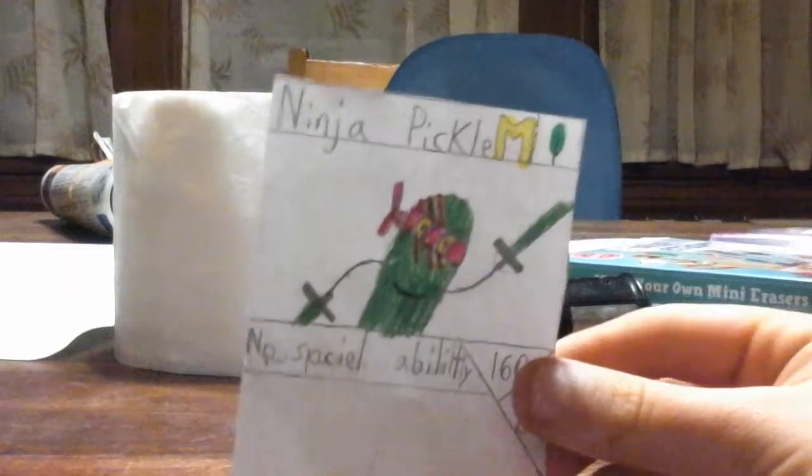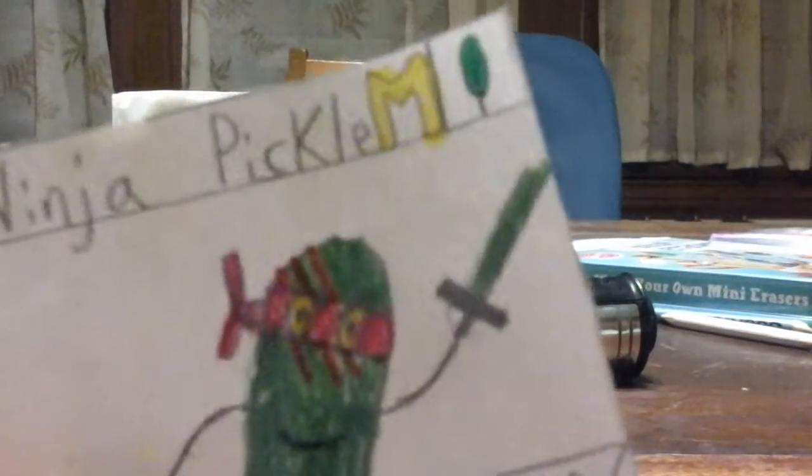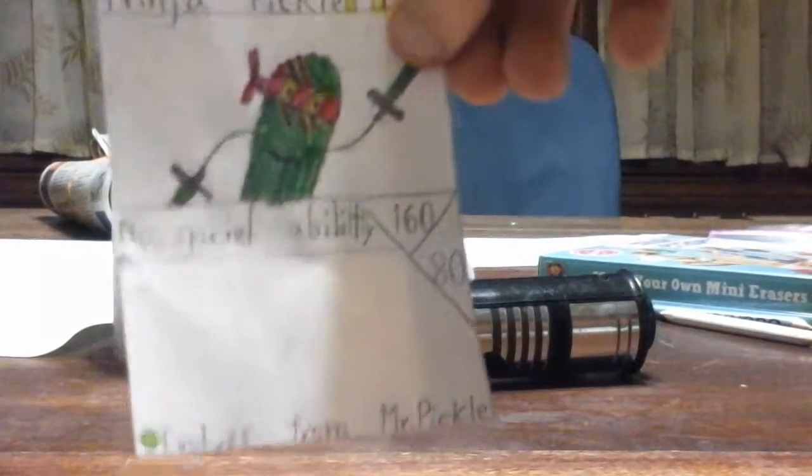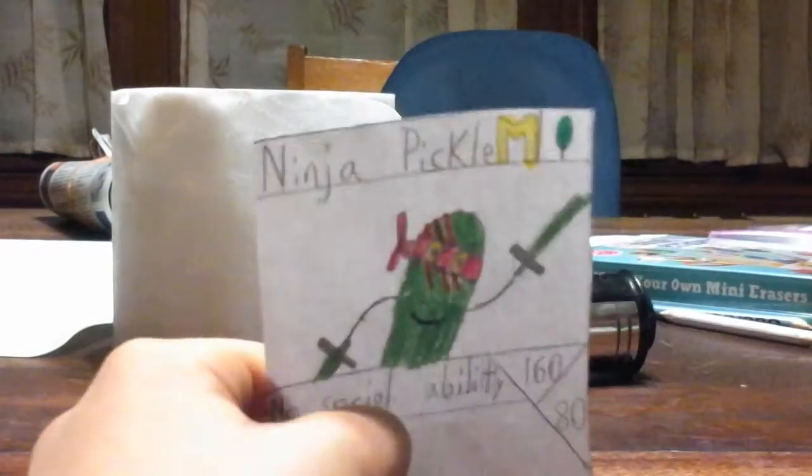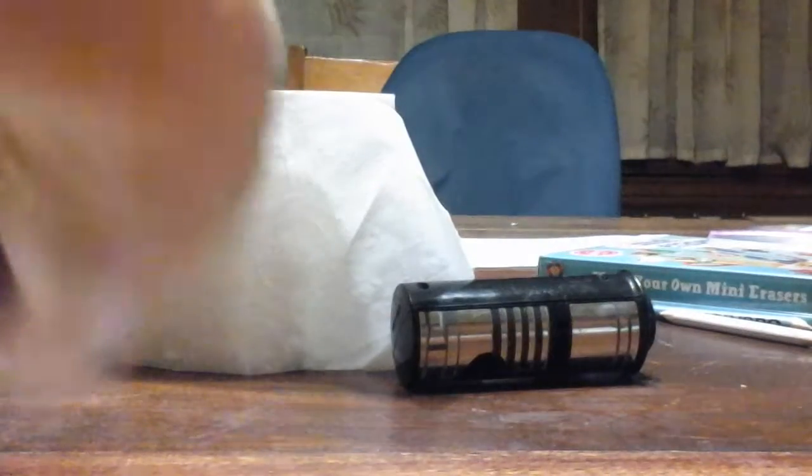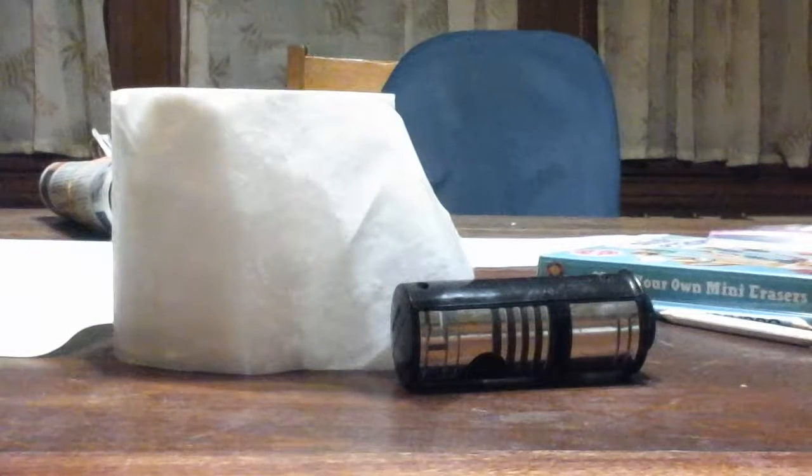Mega Ninja Pickle, this is like the coolest art. He has cucumber swords and he has these big three scratches. No special ability, 160 health and 80 damage. He's an uncommon, evolves from Mr. Pickle. Actually, you just need Mr. Pickle to play this card. He's actually a mega. He's probably the best card in this whole thing. But there's our mega. Yeah, next pack.